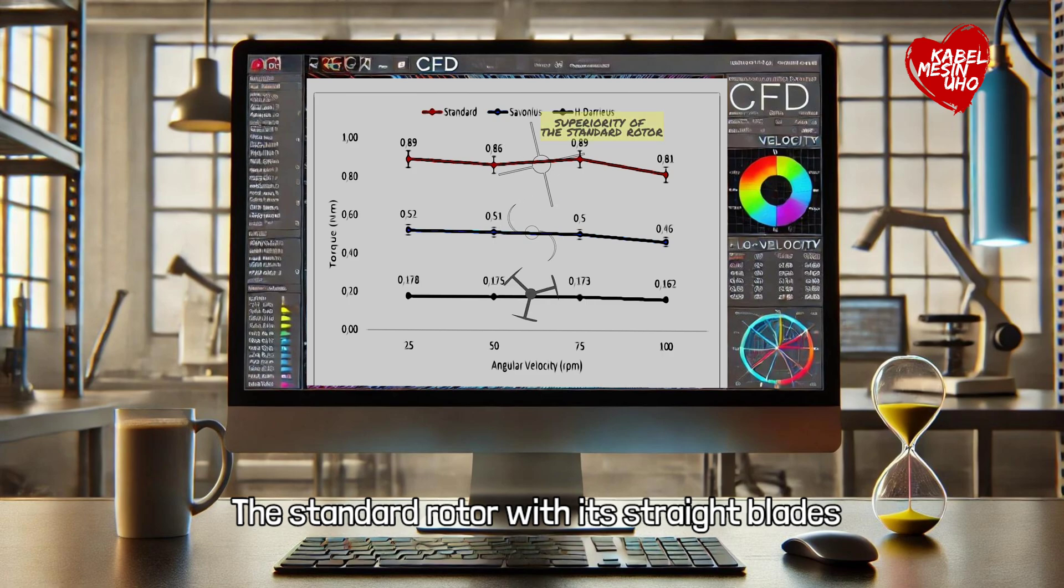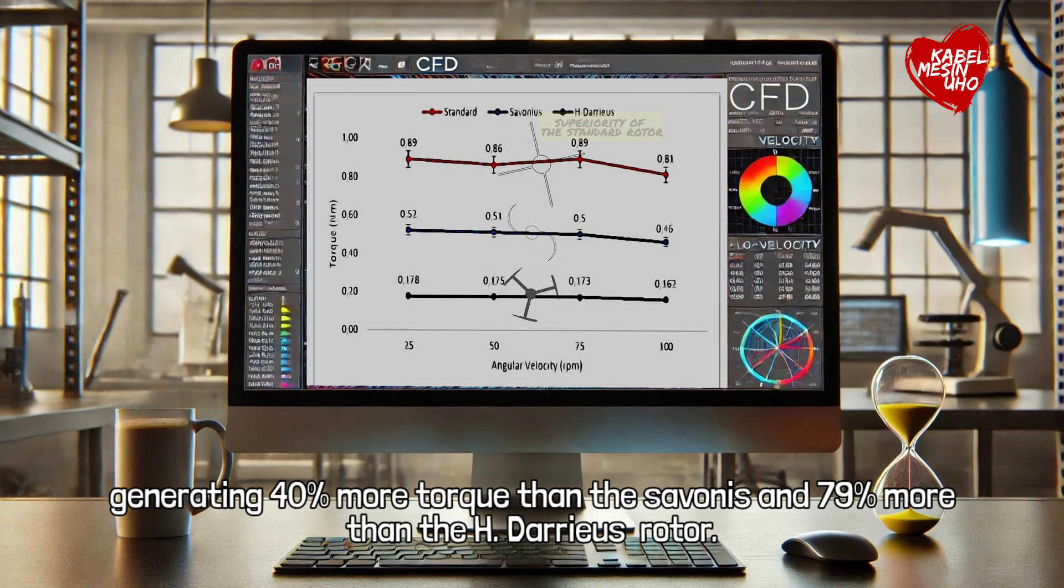The standard rotor, with its straight blades, demonstrated superior performance, generating 40% more torque than the Savonius and 79% more than the H. Darius rotor.